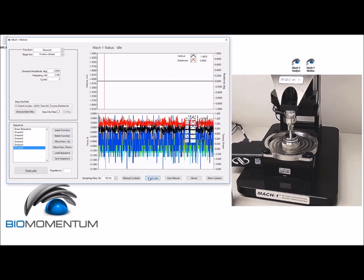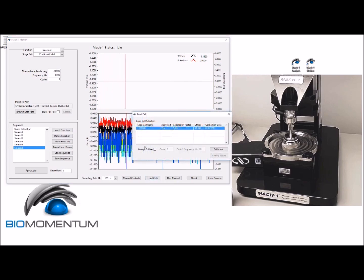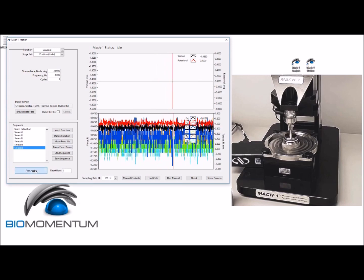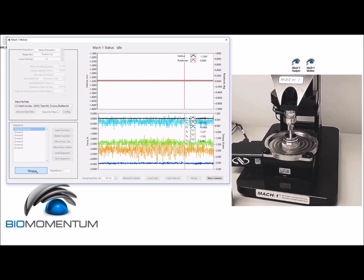Ensure that the low pass filter is unchecked in the load cell window since this filter could create a small phase shift at high frequency. Now let's execute the sequence. So here is the pre-compression of the rubber sample.